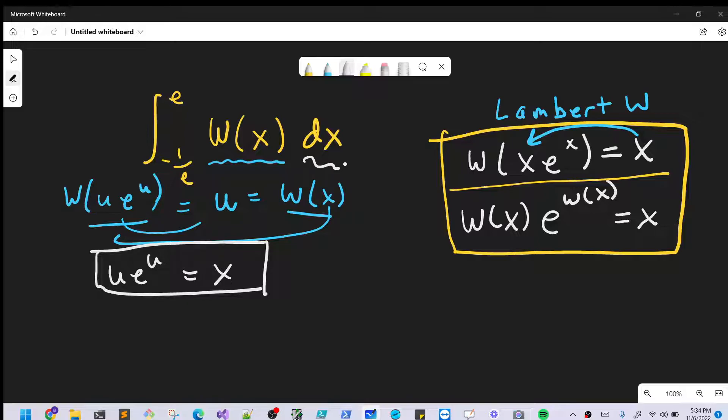But then now we want our dx for doing our u-substitution. So let's take the derivative on both sides. So on the right side here, we're going to have dx. On this piece, we're going to use the product rule. So I'll take the derivative of u, which is 1 times e to the u plus u. Derivative of e to the u is just e to the u.